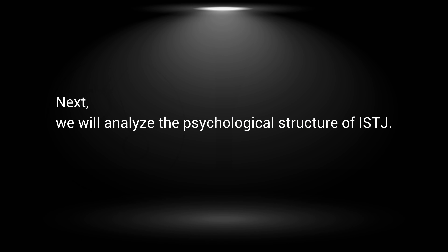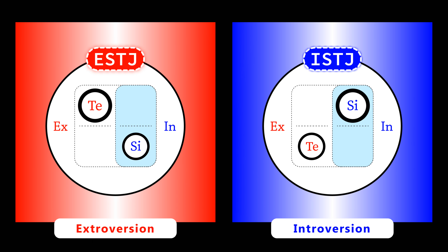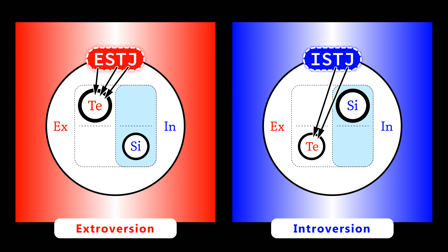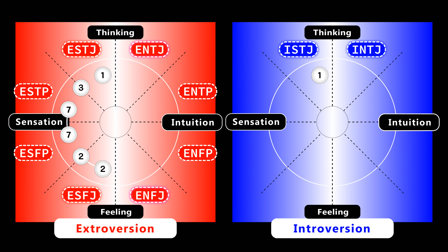Next, we will analyze the psychological structure of ISTJ. The psychological structure of ESTJ and that of ISTJ are similar — the main difference is the location of the dominant function. In the case of ESTJ, the dominant function is located on the outside, and that of ISTJ is located on the inside. In terms of the judging function, both ESTJ and ISTJ are extroverted thinking types — that is the main characteristic of Type 1. As already discussed, Type 1, Type 2, Type 3, and Type 7 tend to be sensation types, but they can also be intuitive types.